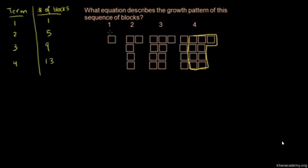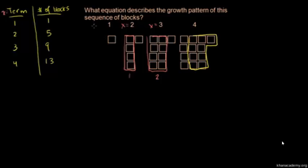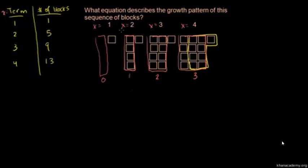One way to think about it: when x equals 1, we just have that one block. When x equals 2, we added one column of four. When x equals 3, we have two columns of four. You could even say when x equals 1, you had zero columns of four blocks. And when x equals 4, we had three columns.